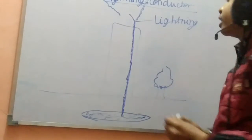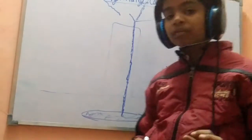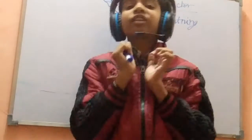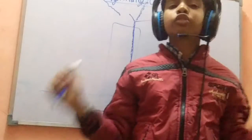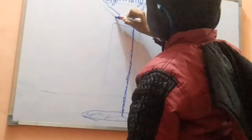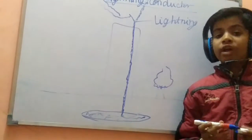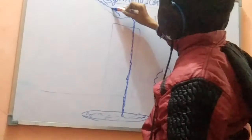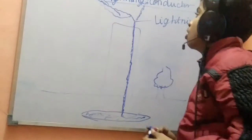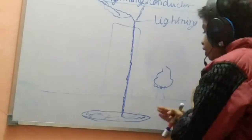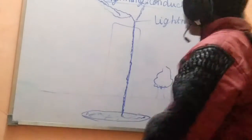Because iron is a good conductor of electricity, it attracts the lightning. The lightning travels through the iron rod and down through the copper wire to the underground metal plate, safely into the earth. In this way, the building is saved.